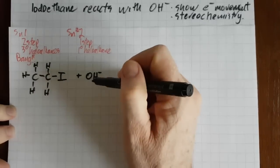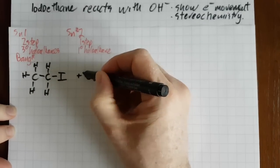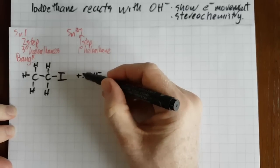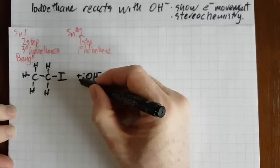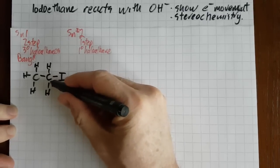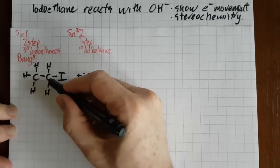So there's iodoethane and there's the hydroxide ion. Now from a lone pair on the oxygen or from the minus sign, you need to draw a curly arrow showing the movement of an electron pair towards that carbon atom there.